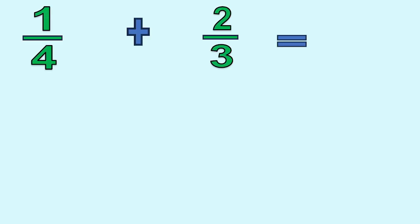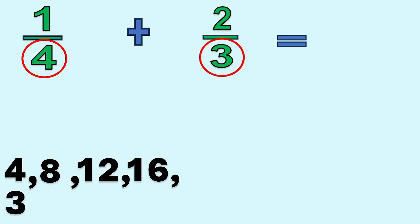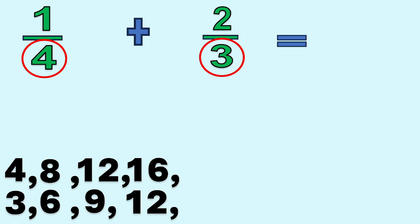Another strategy — let's answer this using LCD. We have 1 fourth plus 2 thirds. We are going to find the LCD or least common denominator. We take the two different denominators 4 and 3 and start making multiples of each. The multiples of 4 are 4, 8, 12, 16. The multiples of 3 are 3, 6, 9, 12. We stop making multiples as soon as we find a number that's the same for both. So the least common multiple is 12.